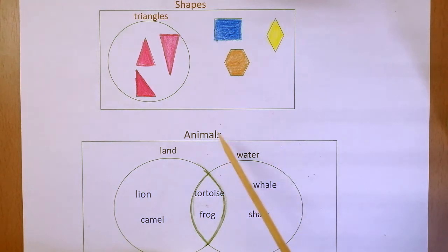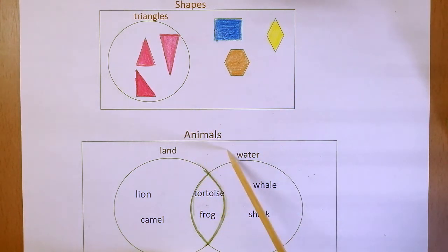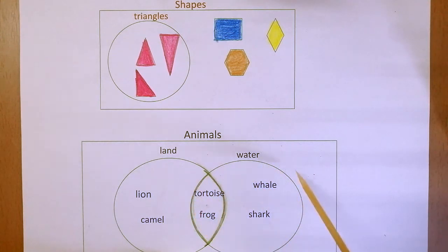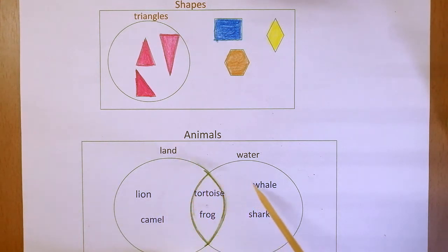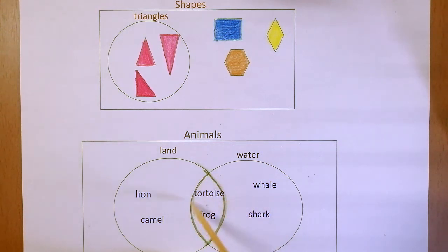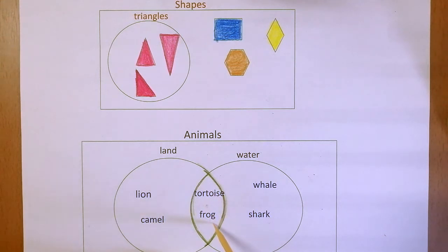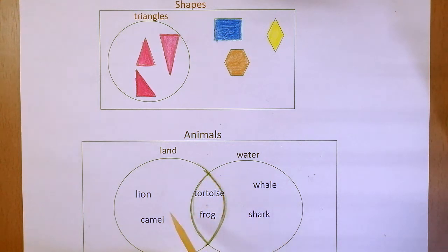Because we made only one group, we used only one circle. Now let's study this Venn diagram about animals, which has two circles, meaning the animals have been grouped in two different ways. One circle is labeled 'land' and the other is labeled 'water.' In the first circle we have lion and camel, so these are land animals. In the second circle, whale and shark are water animals. But notice there is an overlapping area where the two circles intersect — in that part we have written tortoise and frog.